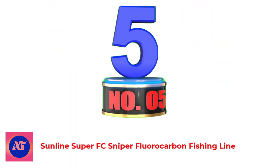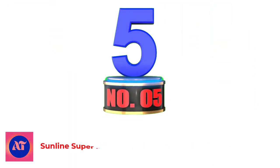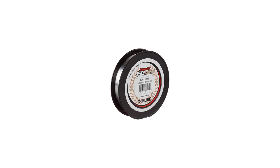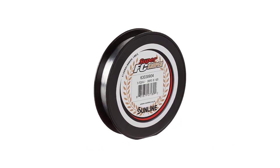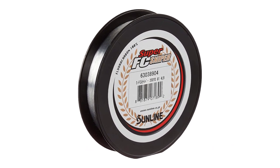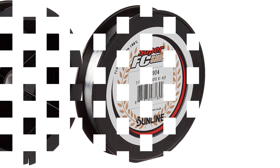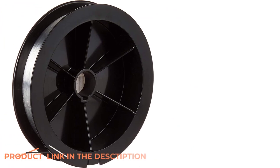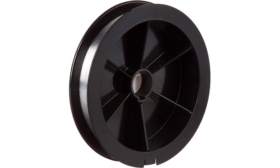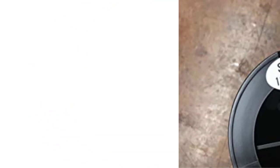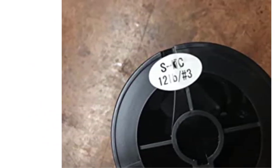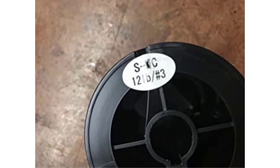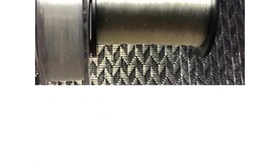Number 5. Sunline Super FC Sniper Fluorocarbon Fishing Line. Sunline FC is a high-performance fluorocarbon line that works great for any water clarity conditions and for any species, including line-shy fish. It features triple resin coatings which offer greater ease of use, creating a line with extra flexibility and suppleness, as well as good abrasion resistance. The flexibility of the Super FC Sniper makes it closer to monofilament and overall has lower memory and better casting properties.